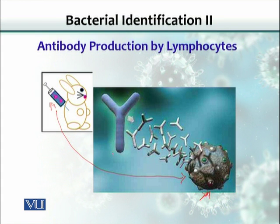An antibody molecule is a Y-shaped structure — a four-chain molecule. We won't go into that detail because there is another course, immunology, that you might study in this degree program. Antibodies have a property: this part of the antibody is called the Fab portion — F-A-B — fragment antigen binding. This part would bind to the antigen.